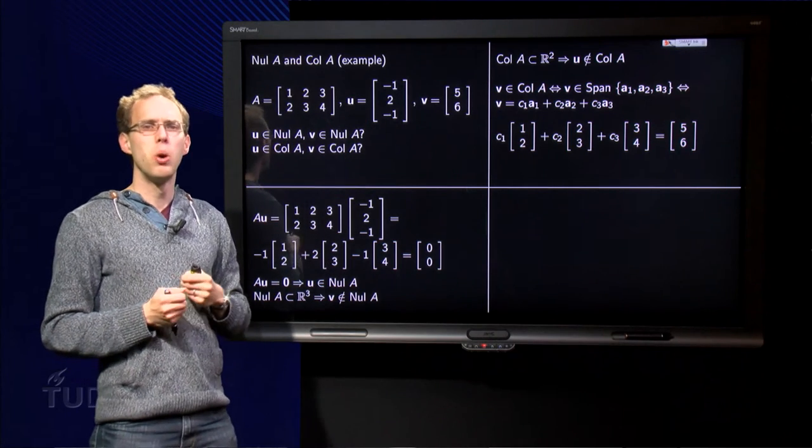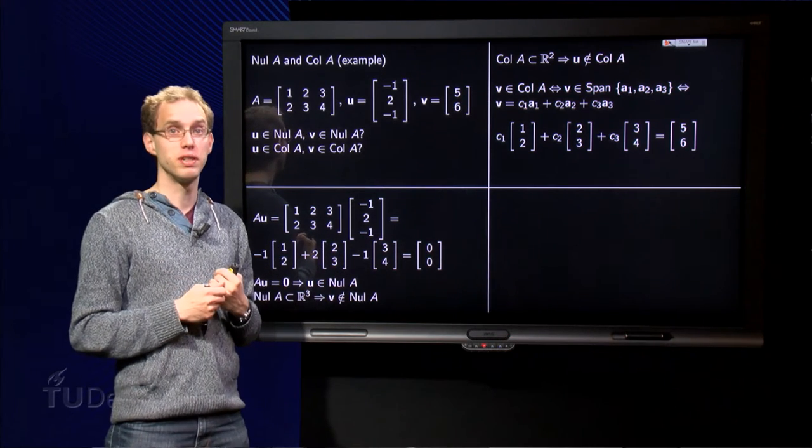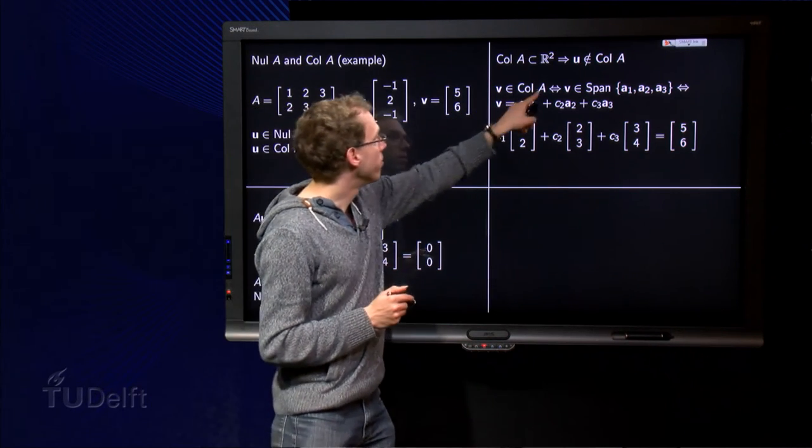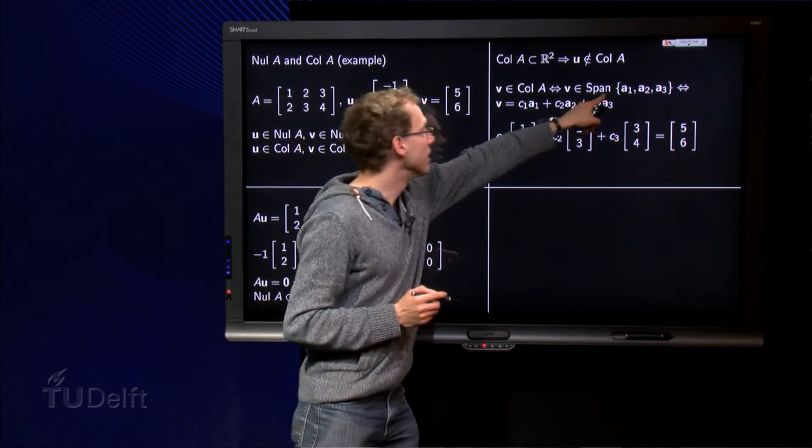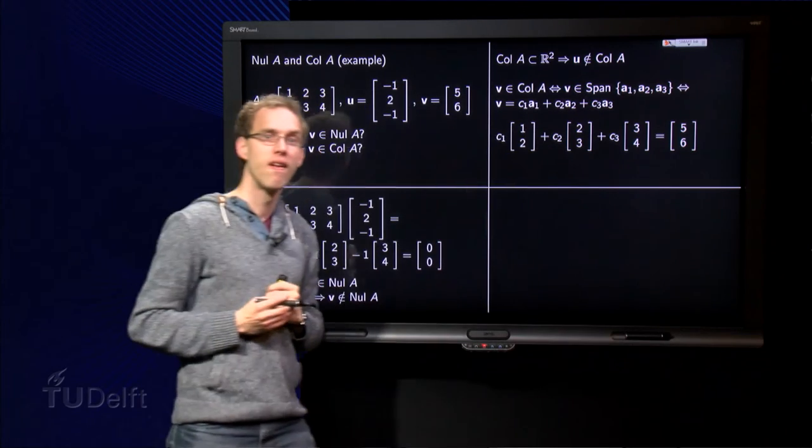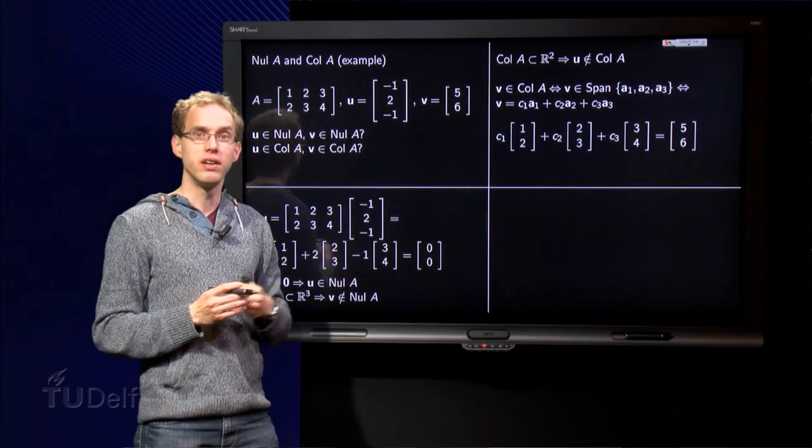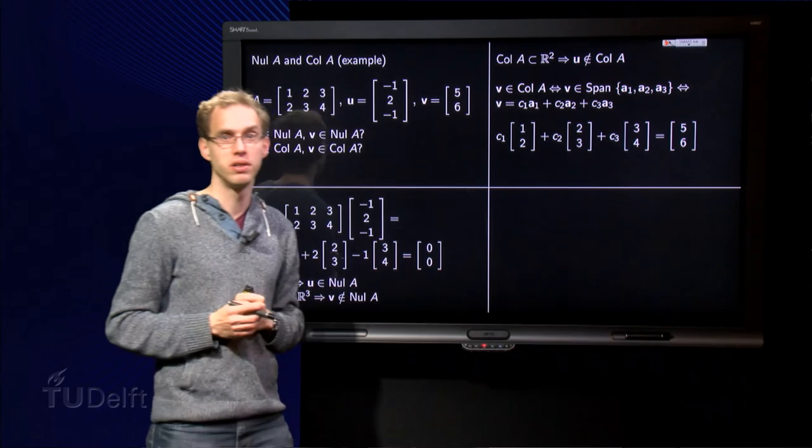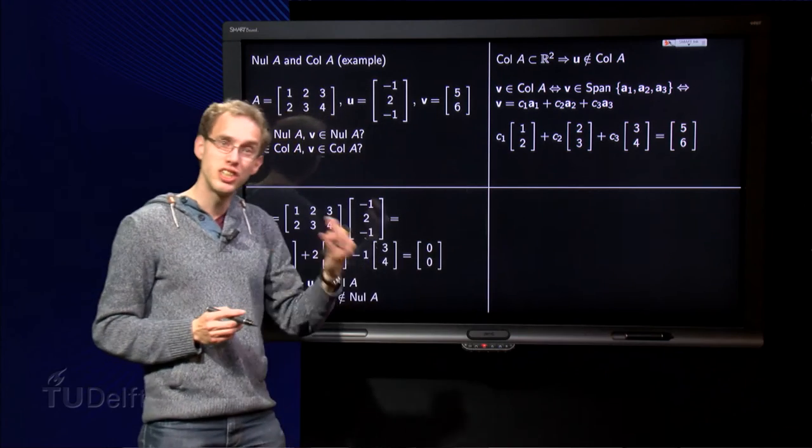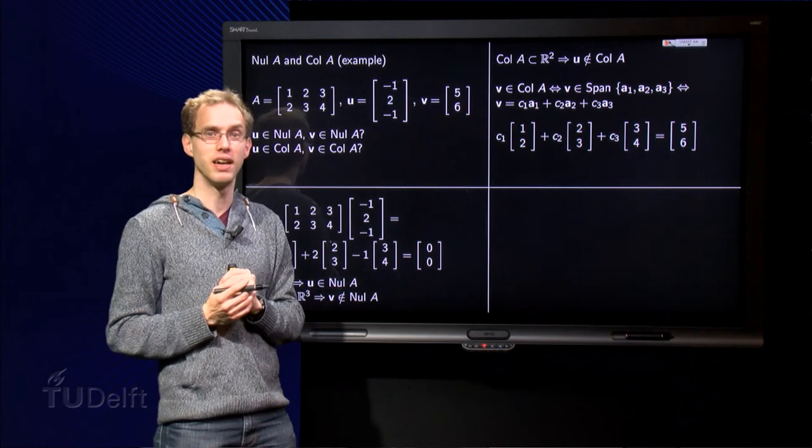What about v? Well, that's a bit harder. v is in R^2, so it could be that v is in the column space of A. How are we going to find out? Well, v is in the column space of A if v is in the span of the columns of A, three columns in this case: A1, A2 and A3. And we know v is in the span of A1, A2 and A3 if v is a linear combination of A1, A2 and A3. So if we can find weights c1, c2 and c3 such that v equals c1 times A1 plus c2 times A2 plus c3 times A3.